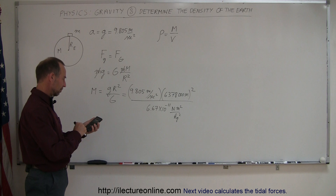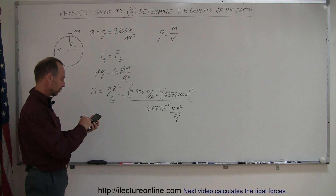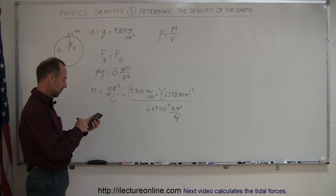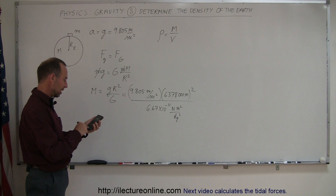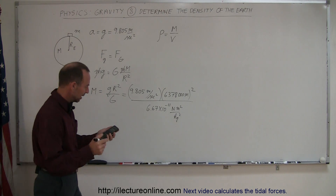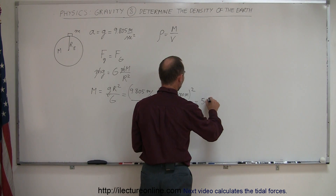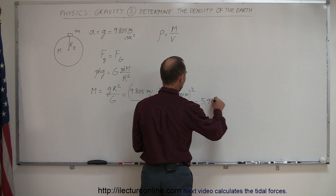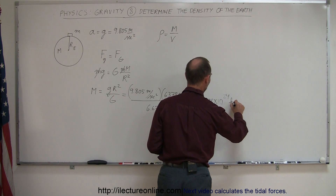So 9.805 times 6,378,000 squared, and divide that by 6.67 times 10 to the negative 11, and it gives us just what we expect — the mass of the Earth: 5.98 times 10 to the 24th kilograms.